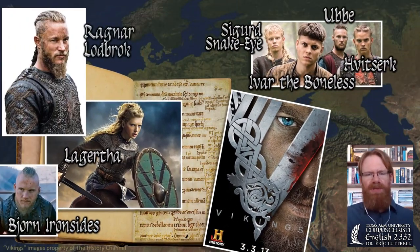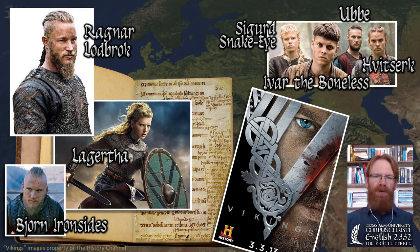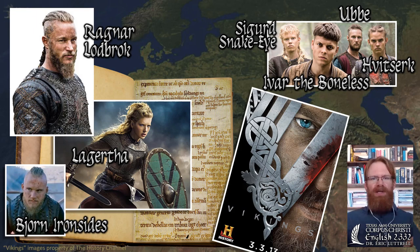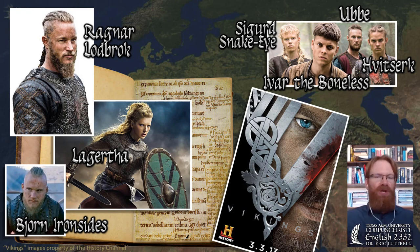Elsewhere in Saxo's text, the Gesta Danorum, he doesn't just tell the story of Amleth — he tells it at the end of book three and beginning of book four — but he also describes a lot of other characters we may be familiar with today. For instance, if you watch the History Channel show Vikings about Ragnar Lodbrok and his sons, Saxo is one of the main sources for what we know about Ragnar and his sons, including his first wife Lagertha. The figures of Bjorn Ironsides, Ivar the Boneless, Uba, and Sigurd Snake-Eye do have their basis in something that happened in history.